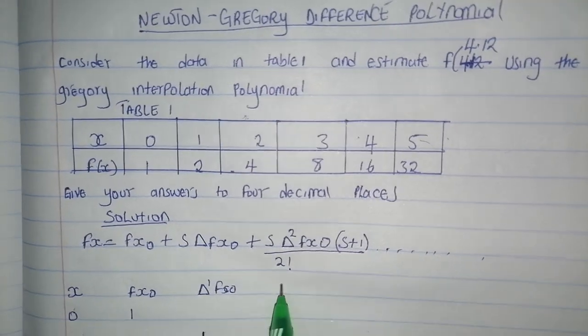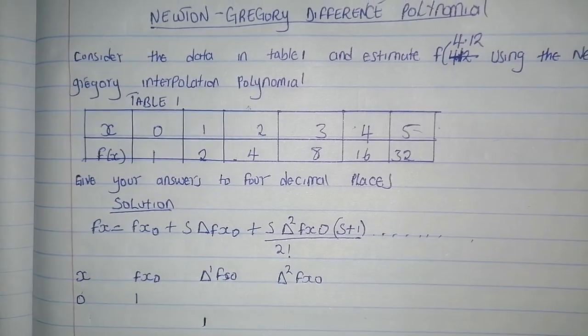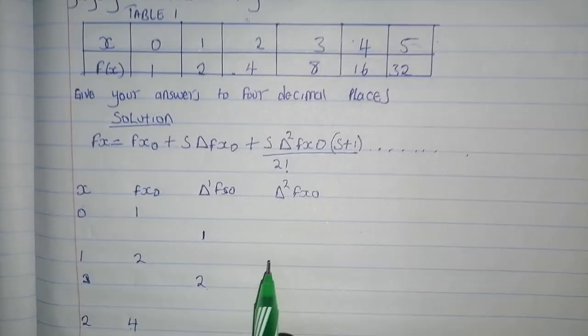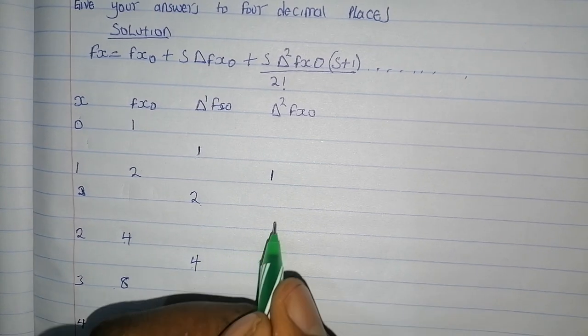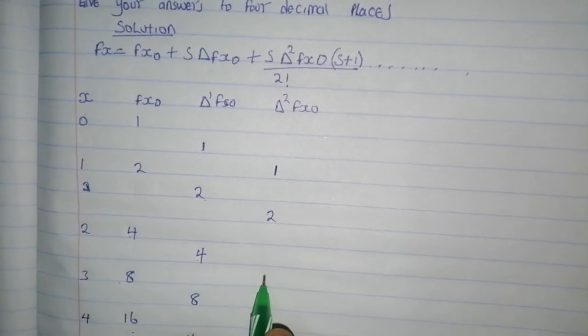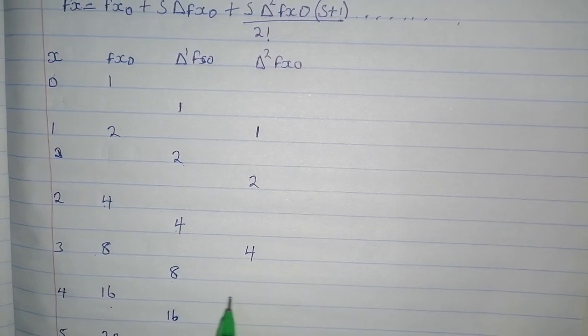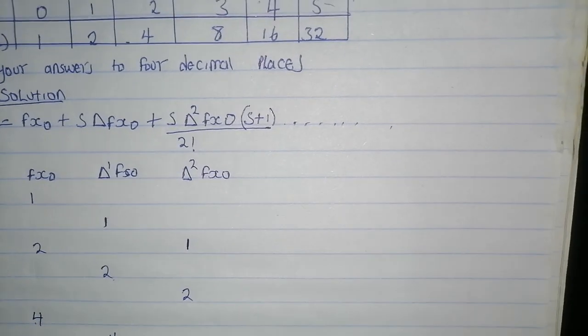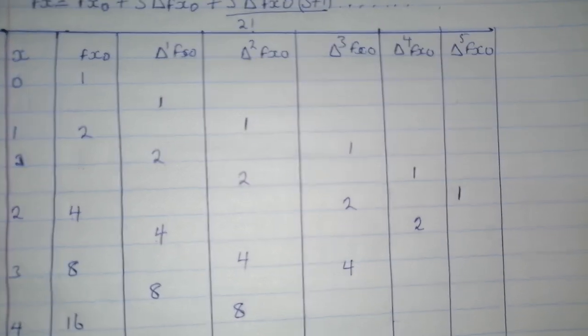Then you go to delta squared f(x0) and continue with the same process. Take 2 minus 1, which is 1. 4 minus 2, which is 2. 8 minus 4, which is 4. 16 minus 8 is 8. You continue like that until you reach delta^5.